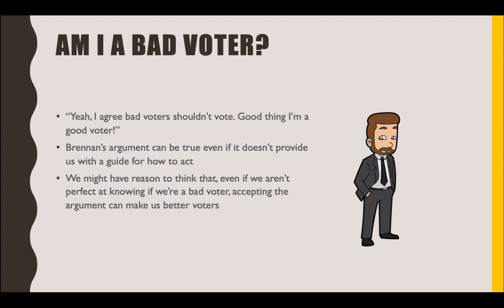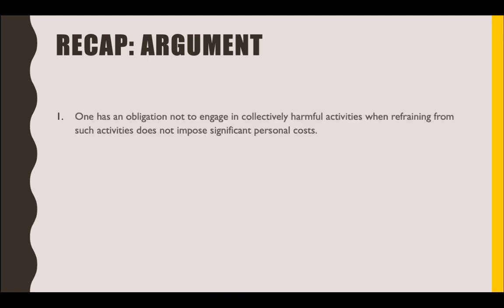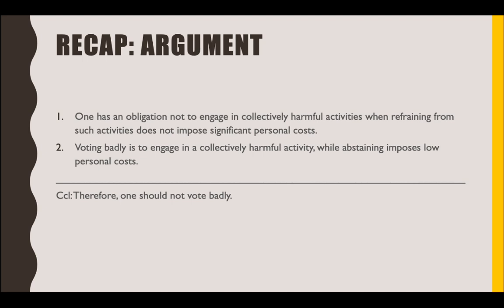To recap, Brennan's argument is as follows. Premise one: one has an obligation not to engage in collectively harmful activities when refraining from such activities does not impose significant personal costs. Premise two: voting badly is to engage in a collectively harmful activity, while abstaining imposes low personal costs. Conclusion: therefore, one should not vote badly — where voting badly means voting without sufficient reason for harmful or unjust policies or candidates.